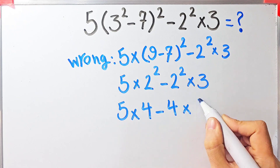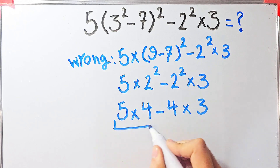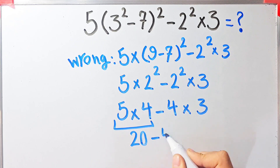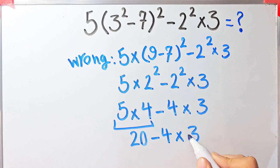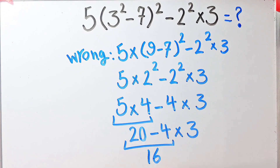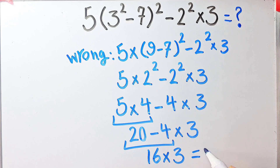Five times four equals 20. Then 20 minus 4, times three. 20 minus 4 equals 16, and 16 times 3 equals 48. They say the final answer of this question equals 48.